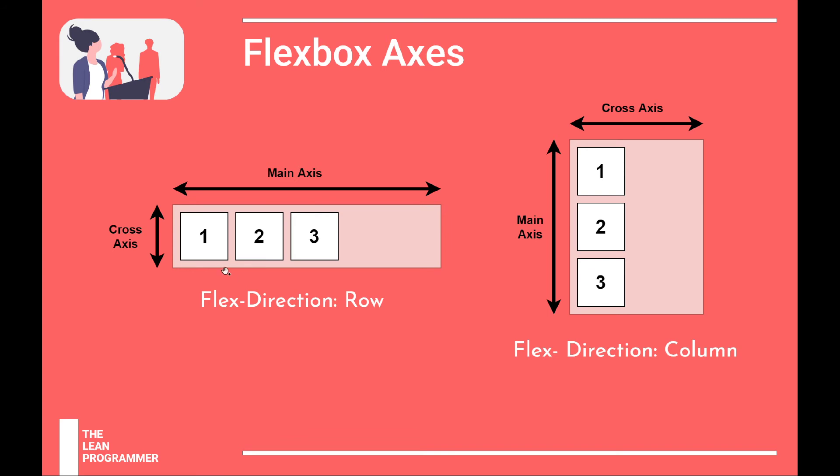For example, let's say consider that these are nothing but three p tags or p elements. So if you place one after another, p1, p2, p3, and your flex direction is row, then they will go in the horizontal direction along the main axis.